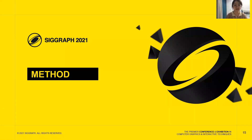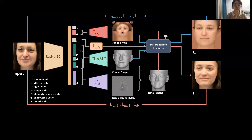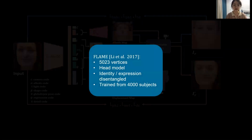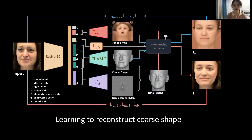Now let's have a close look at DECA's architecture. DECA is built using an encoder-decoder architecture. The input image is regressed to several parameters corresponding to albedo, lighting, geometry, and expression-conditioned detail displacements. Our geometry prior is FLAME, a 3D head model that combines separate linear identity shape and expression spaces with linear blend skinning and pose-dependent corrective blend shapes to articulate the neck, jaw, and eyeballs. FLAME outputs a mesh with around 5,000 vertices. Following the blue arrows, a differentiable renderer produces a coarse facial image, which is compared with the input image using a landmark reprojection loss, a photometric L1 loss, and an identity loss. These losses train the network to produce a robust and accurate coarse-shape reconstruction.